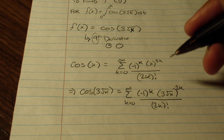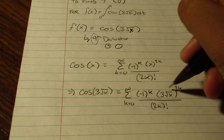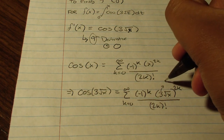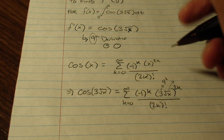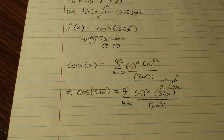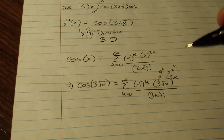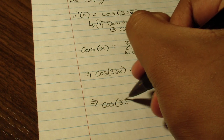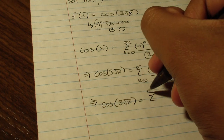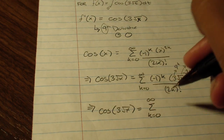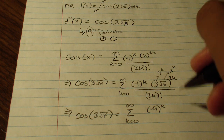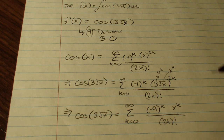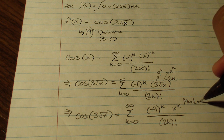Now let's simplify this before we move further. We know that this value is squared and then taken to the k power since the exponent is 2 times k. So this 3 can actually be written as 9 to the k, and this square root of x can be written as x to the k, since the square root of x squared is simply x. We can combine the negative 1 and the 9, so our simplified version becomes cosine 3 root x equals the sum from k equals 0 to infinity of negative 9 to the k times x to the k, all over the quantity 2k factorial. And that's the Maclaurin representation of our function.